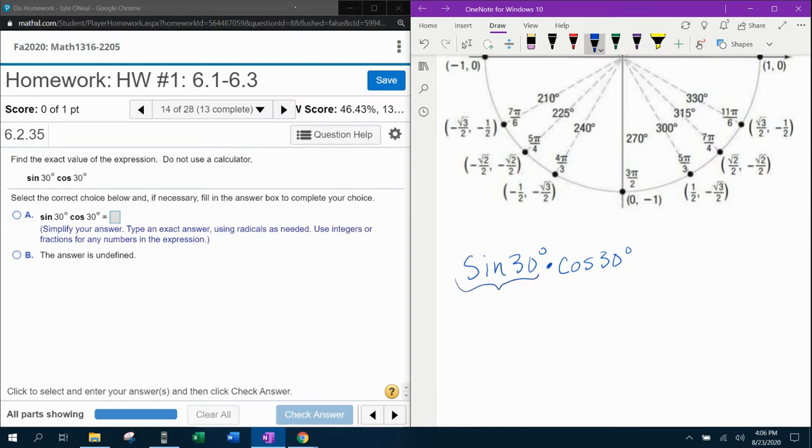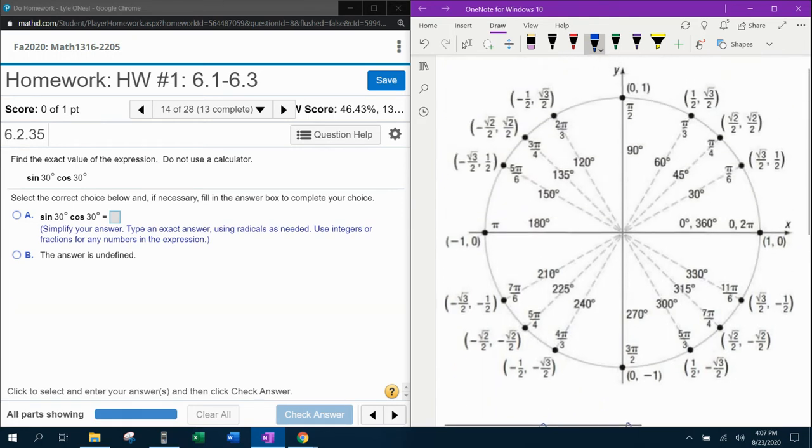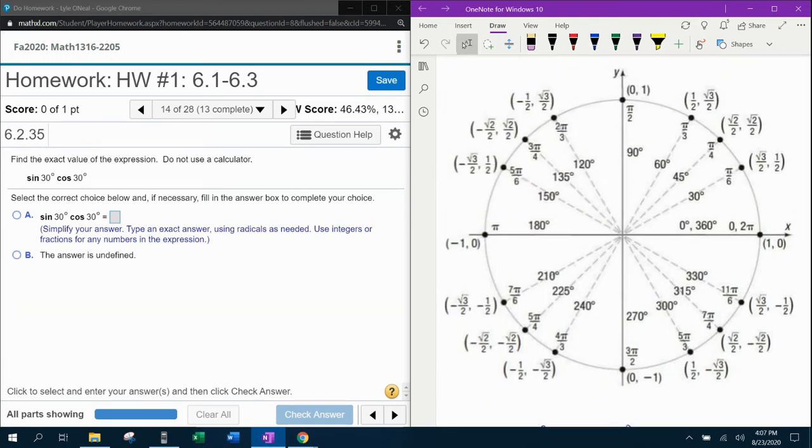So really, I need to find the sine of 30 degrees and the cosine of 30 degrees, and we need to multiply those together. Remember that in the unit circle, sine is y and cosine is x. And so what I'm interested in is the x and the y coordinates of the ordered pair at 30 degrees. And we can figure that out real quick by going to our unit circle.